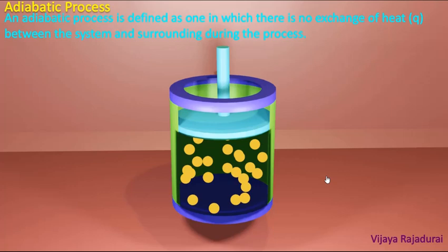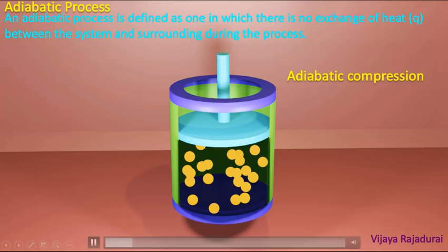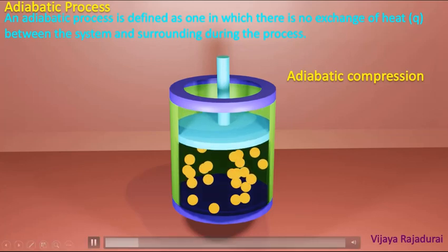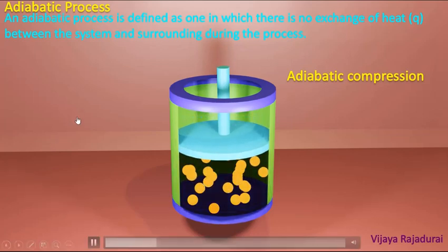We know that all gas molecules have some kinetic energy, so due to this kinetic energy the gas molecules have some pressure and some temperature. Now we see what happens in adiabatic compression when the piston moves in the downward direction.